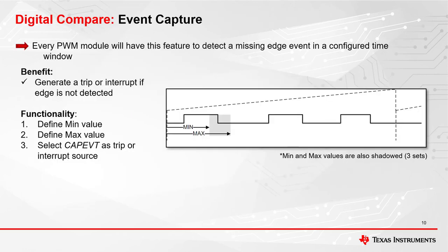Another safety feature that was added was the event capture. This is within the digital compare submodule and this feature will detect a missing edge in a configured time window determined by the XMIN and XMAX registers. These registers are also shadowed and have three shadow register sets associated with them. If there is a missing edge detected between the configured time window, a trip or interrupt can be generated.